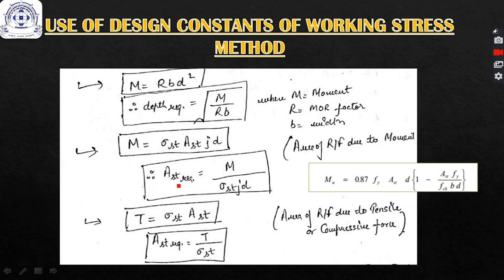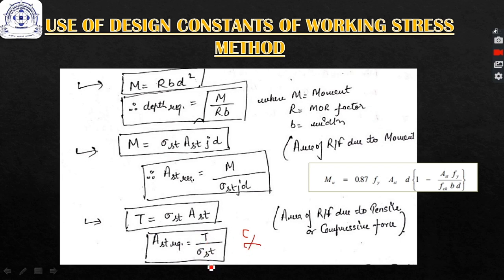In working stress method, you can directly use the formula Ast = M / (sigma_st × J × d), where sigma_st is the permissible stress in steel, J is the design constant, and d is the effective thickness. If reinforcement is to carry a tensile force T, then Ast = T / sigma_st, and for a compressive force C, Ast = C / sigma_sc.